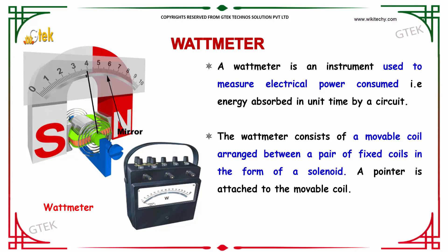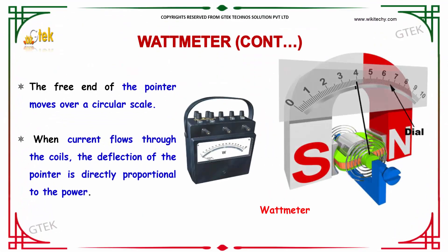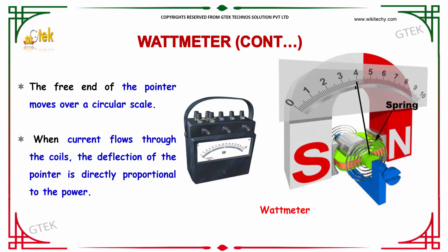A wattmeter consists of a movable coil arranged between a pair of fixed coils in the form of a solenoid. A pointer is attached to the movable coil, and its free end moves over a circular scale. When current flows through the coil, the deflection of the pointer is directly proportional to the power.